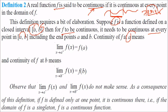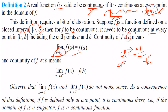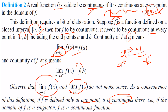Continuity at a means the right-hand limit as x→a⁺ equals f(a), and continuity at b means the left-hand limit as x→b⁻ equals f(b). Because of this definition, if f is defined only at one point — that is, the domain of f is a singleton — then f is a continuous function.